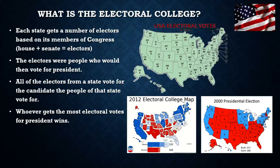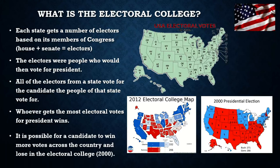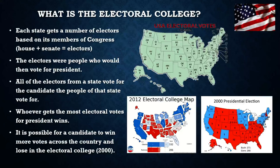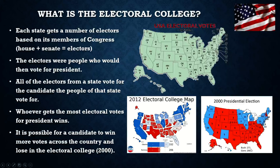Whoever gets the most electoral votes for president wins, so long as they get more than 270 electoral votes — 270 is the magic number. It is possible for a candidate to win more votes across the country and lose the Electoral College. In the year 2000, President Bush was elected. He got 650,000 fewer votes than Al Gore across the country, but because he won Florida's 25 electoral votes, he won the Electoral College 271 to 266. That has happened three times in our history: 1872, 1888, and 2000, out of quite a few elections.